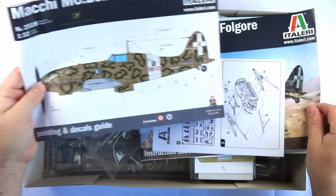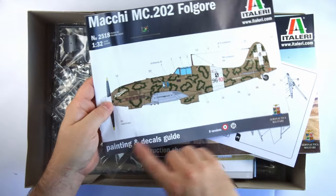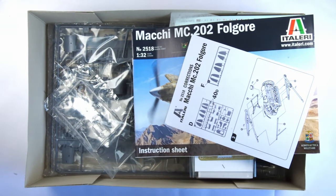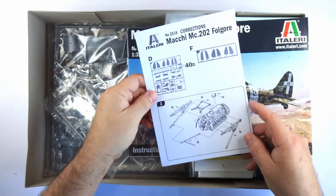Fishing this stuff out we have a glossy painting and decaling guide, then a small errata sheet on the glossy color instruction book.